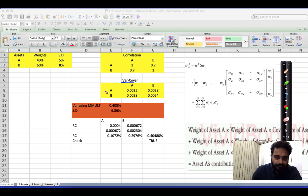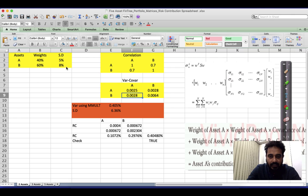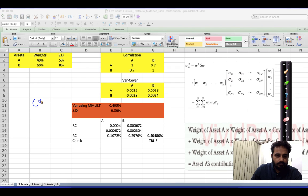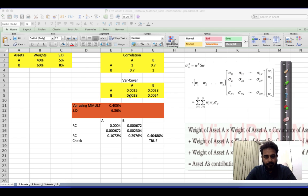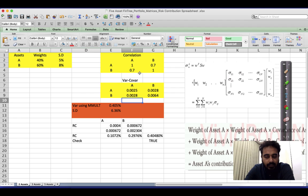Now this is a variance covariance matrix. When you are calculating covariance of A, A, that is nothing but variance of A. So this number 0.025 is nothing but square of that 5 percentage. In the same fashion, this number has to be square of this 8 percentage. Now how do you get covariance of A and B? It is nothing but sigma of A, sigma of B into correlation of A and B. So that is how you make your covariance.